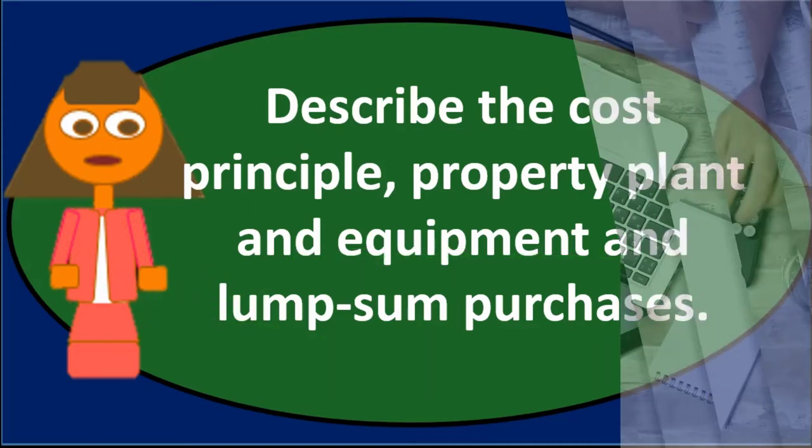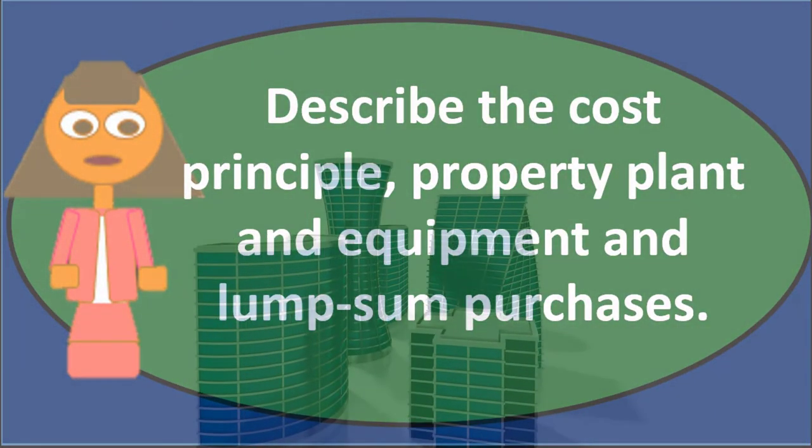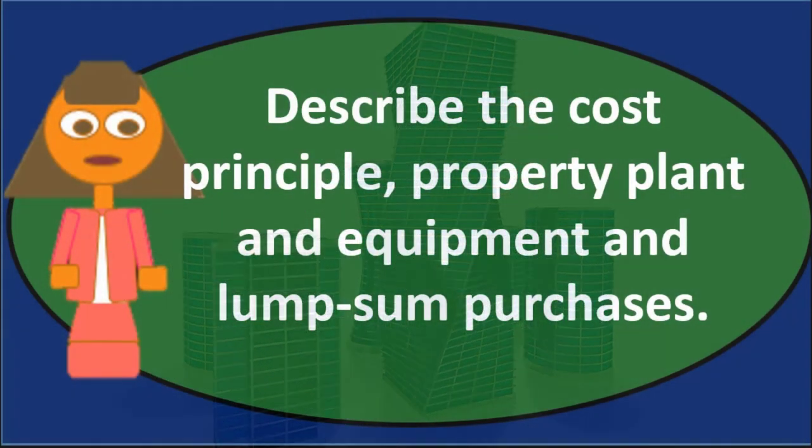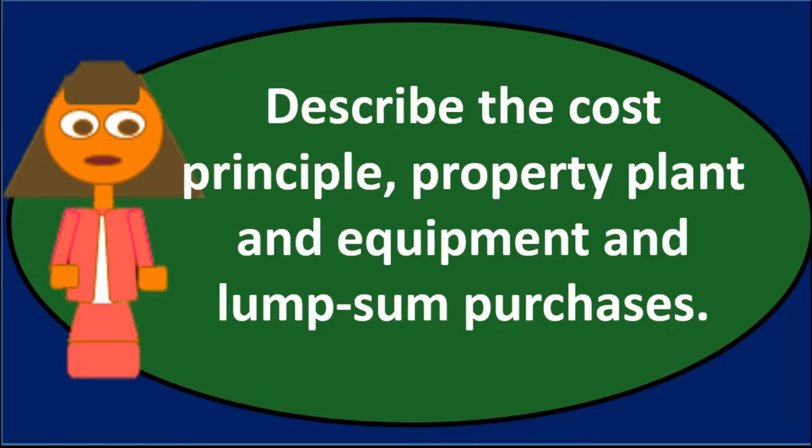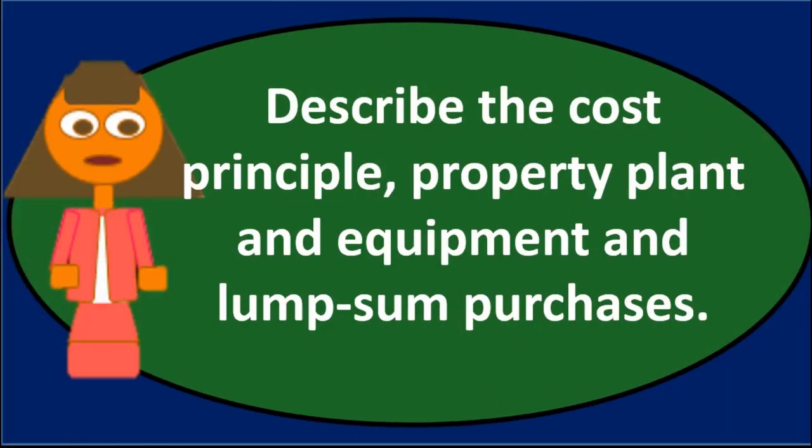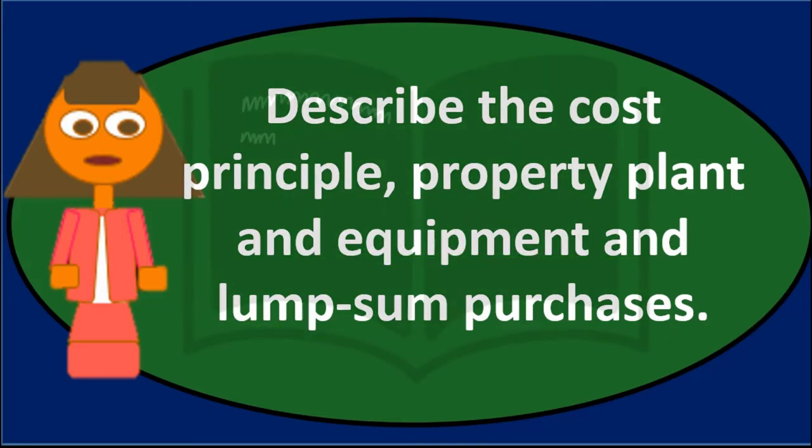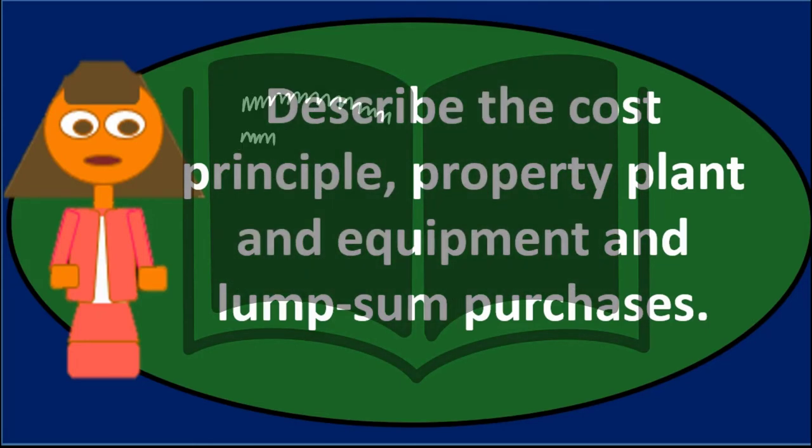We need to break those out into their components so we can depreciate the building, which will deteriorate over time, whereas the land will not. Therefore, whatever we put on the books as land will remain on the books indefinitely, whereas anything we put on the books for property, plant and equipment will depreciate.